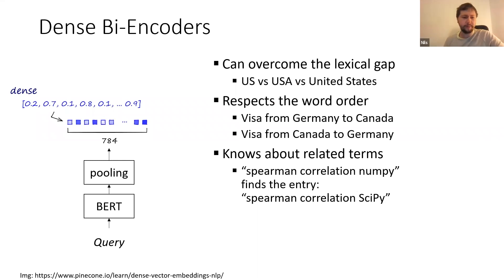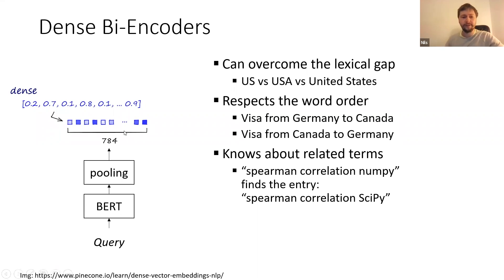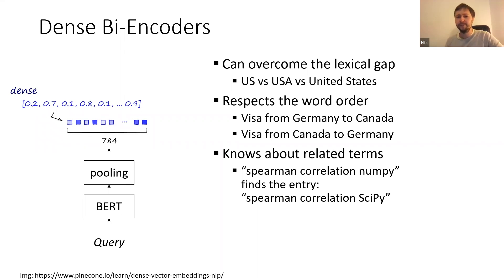One technique that is really popular in research is so-called dense bi-encoders. The idea is you take the document and the query, pass them through a transformer network like BERT, which gives you contextualized word embeddings. You then do a pooling operation — for example, taking the mean of all contextualized word embeddings — giving you a fixed-size 768-dimensional vector. You can then search in this vector space, and dense bi-encoders can overcome many problems in lexical search.